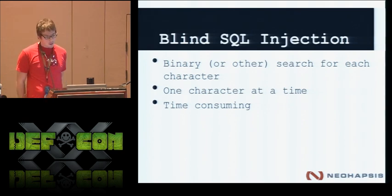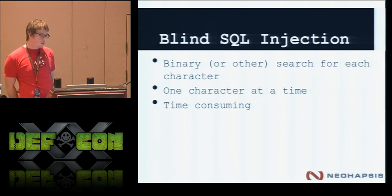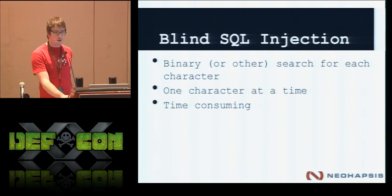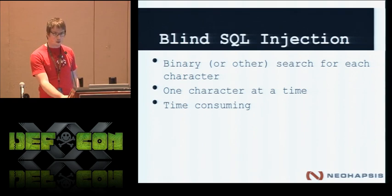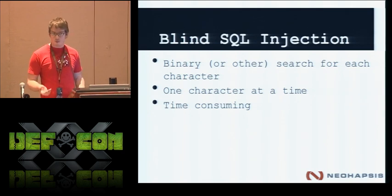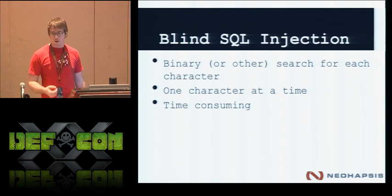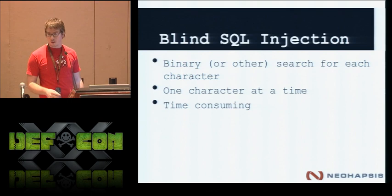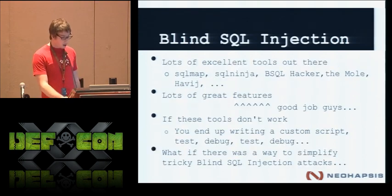When you're doing blind SQL injection, there are a couple of different ways to search through the data. The way current scripts and tools work is typically some sort of binary search — one character at a time. Some tools have multi-threading options, like SQL map with up to 10 threads, but performance can be questionable and you might get false data. It's generally very time-consuming: you're not executing one query to get results — you have to execute multiple queries and step through a lot to get the end result.